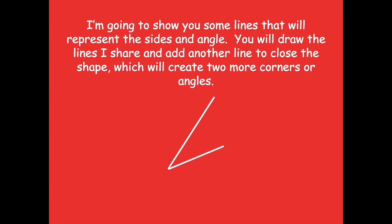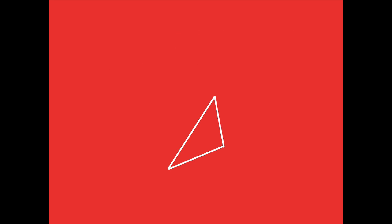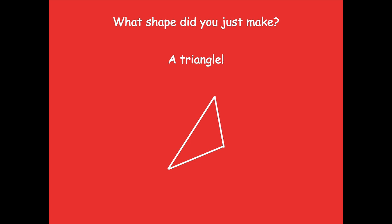Alright friends, pause if you need more time. So here are my two lines. I'm going to draw one more just like this, and now I have a closed shape. Remember, a polygon is a closed shape with three or more angles or sides. So a triangle is the smallest polygon because you can't have less than three sides to make a closed shape. So what shape did you just make? Yeah, we made a triangle.